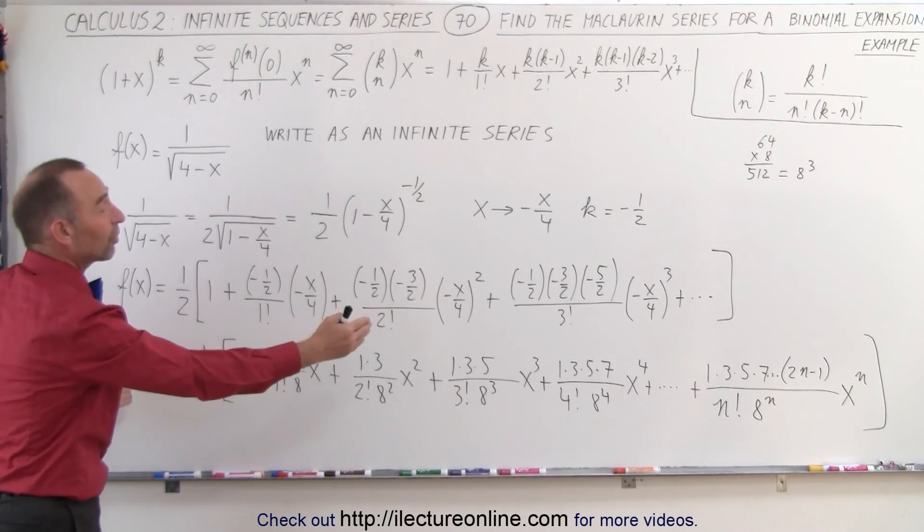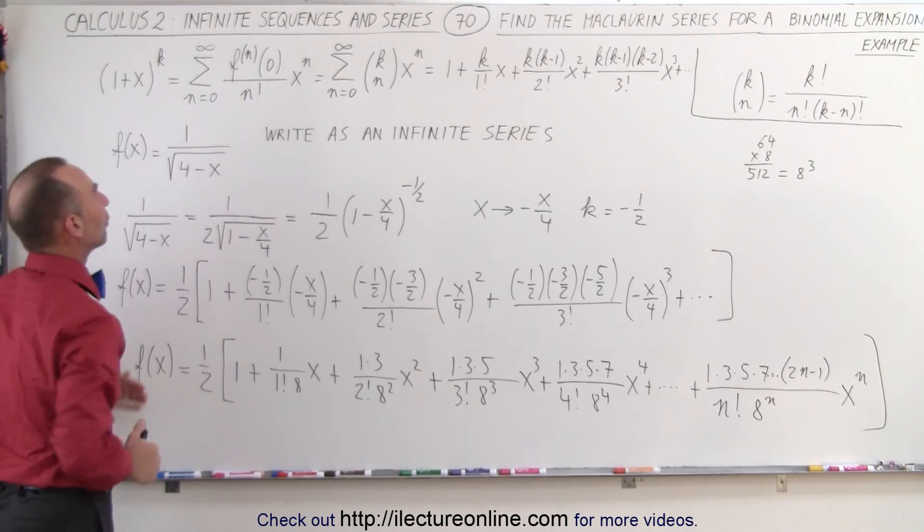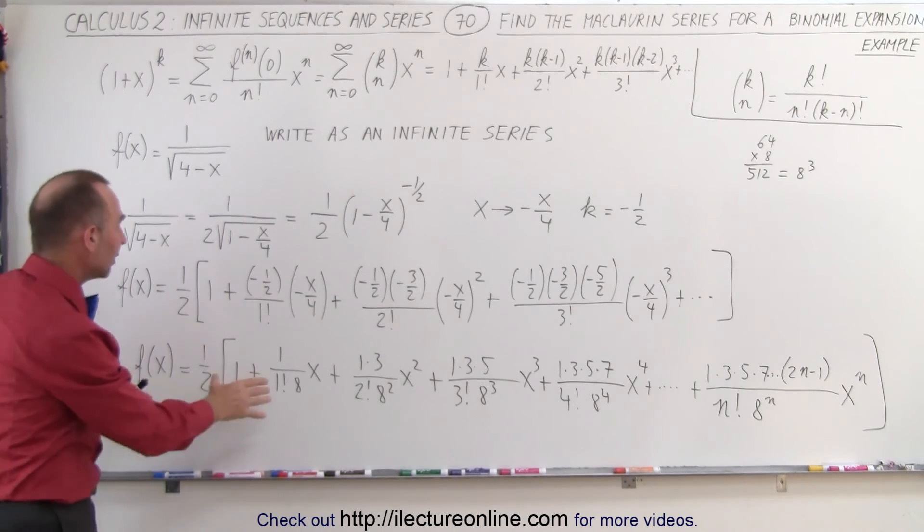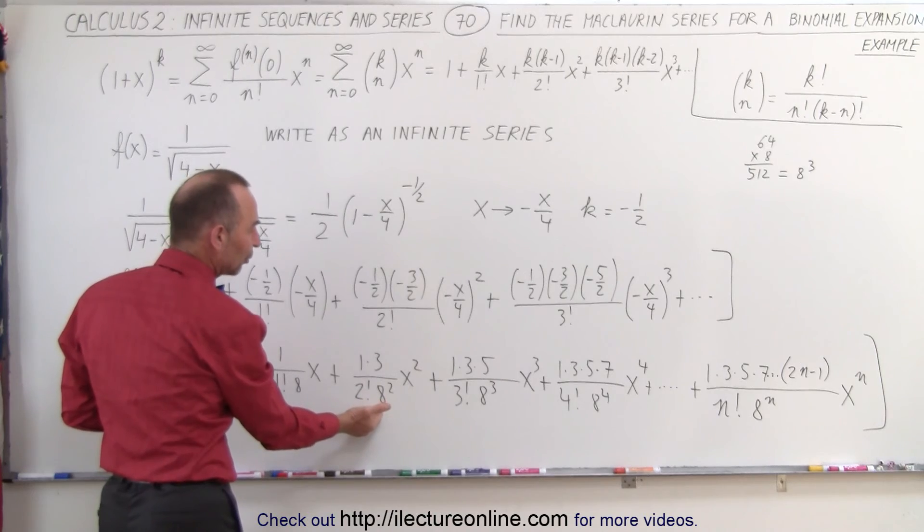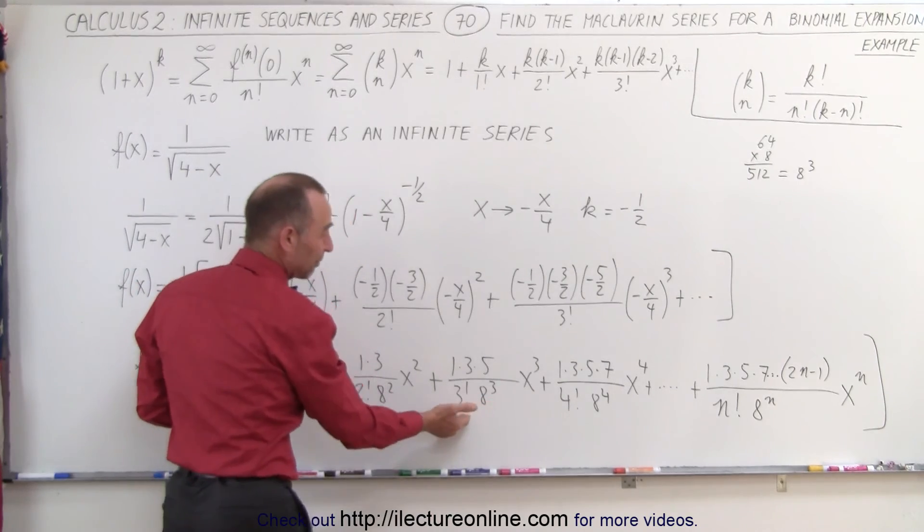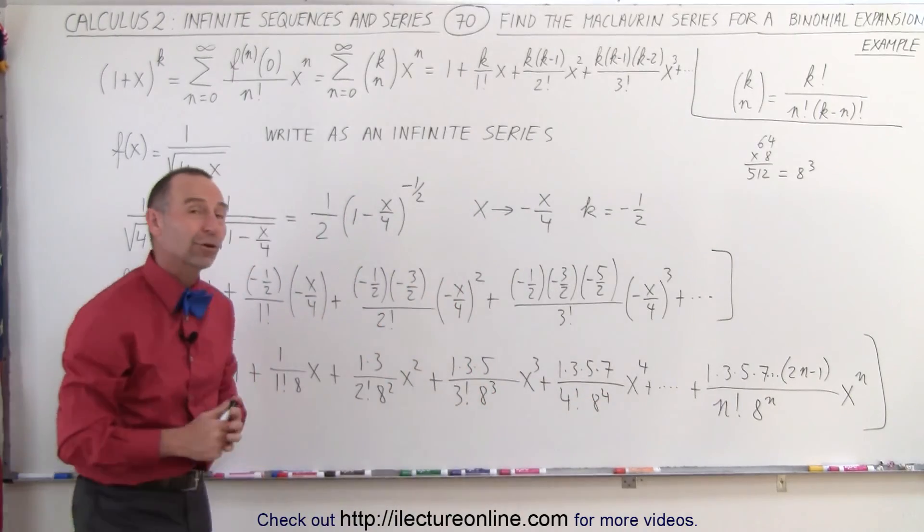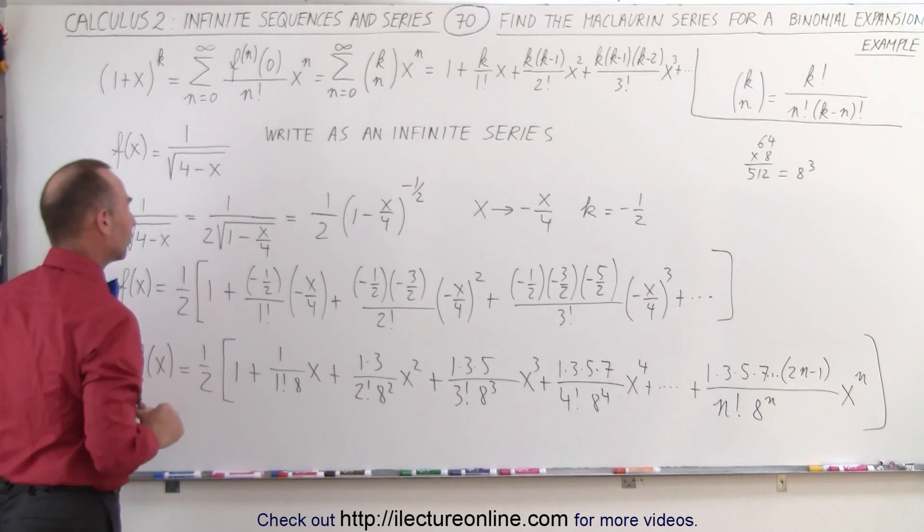Of course how far do you need to go in order to get a value that's close to this? Well notice that the denominator gets to be pretty small pretty quickly. 8 squared 2 factorial, 8 cubed 3 factorial, 8 to the fourth 4 factorial. So you don't have to go too many terms before you get a reasonable value for this particular expansion.